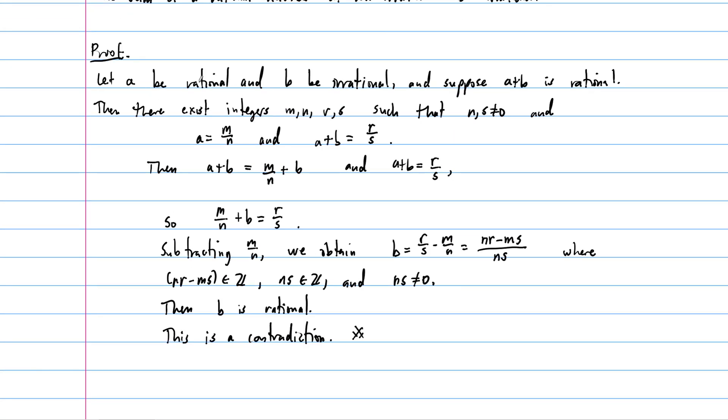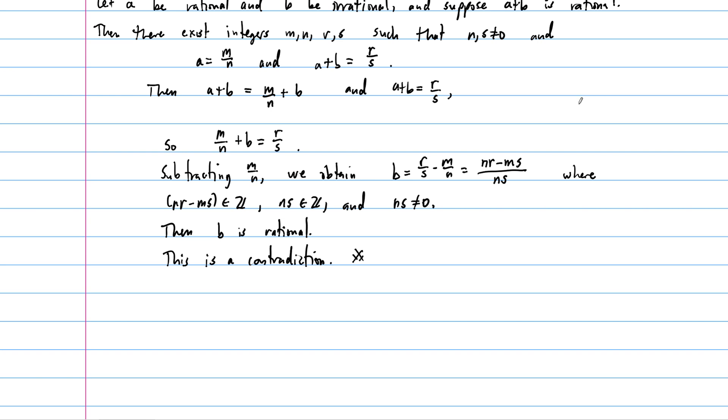Well, A and B being rational and irrational is not something crazy that we assumed. Our supposition that's wrong, then, is that A plus B is rational. So we conclude, then, that the sum A plus B must be irrational.